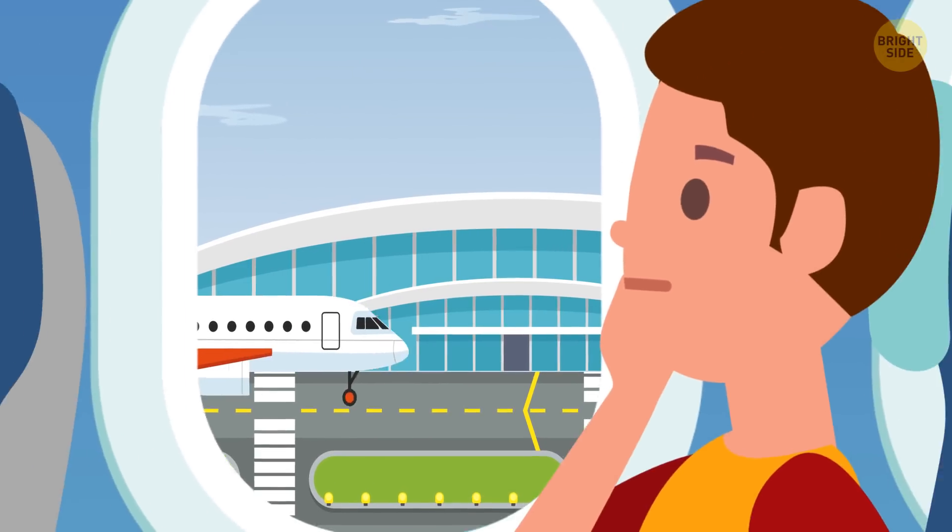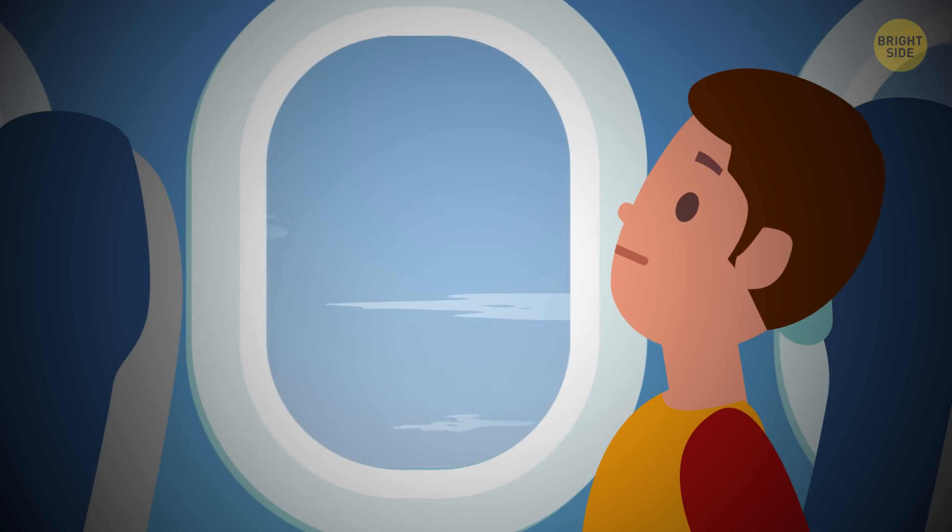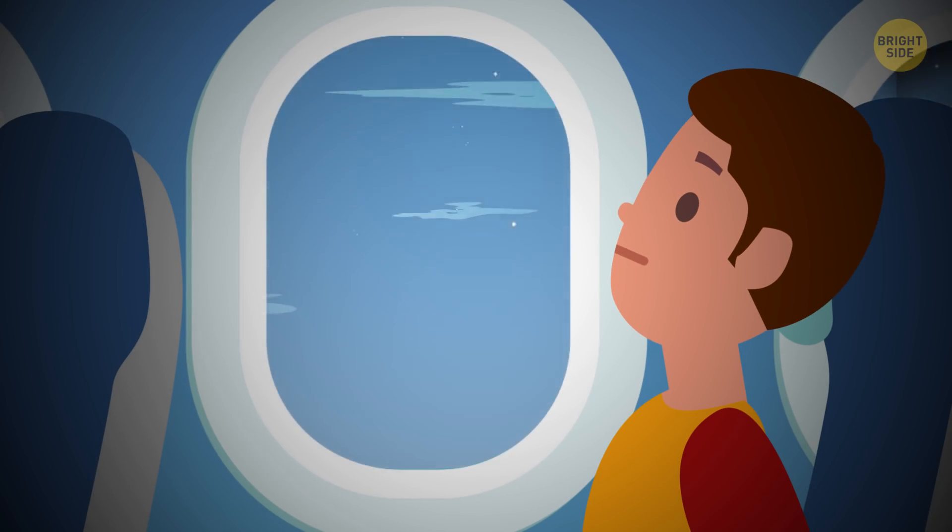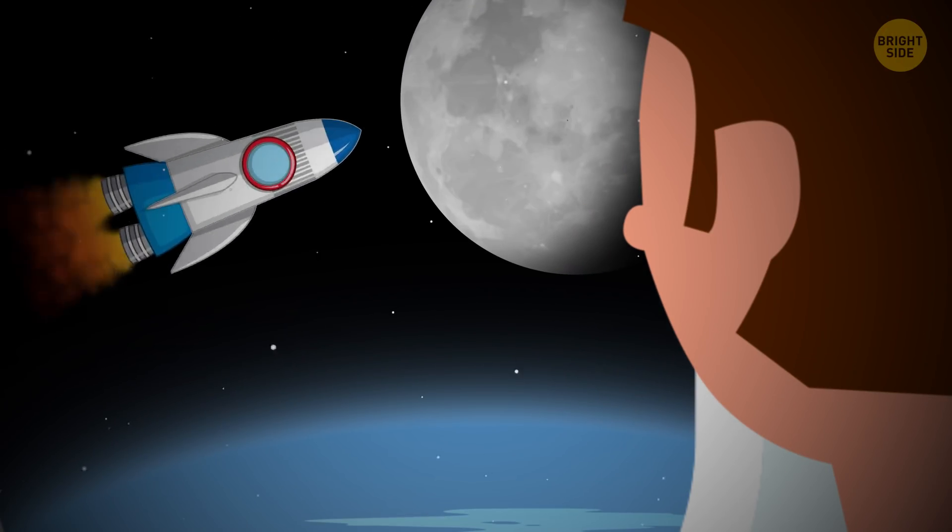Right, now I understand why airplanes can't move backward. But there are a few other questions that I've always had regarding aircraft, like can planes fly right into space? Could they replace rockets one day?